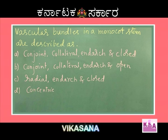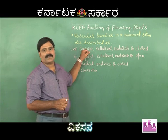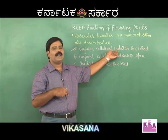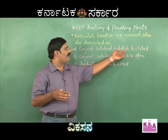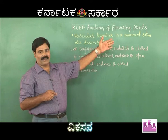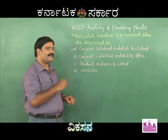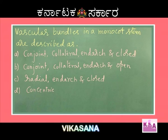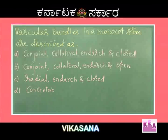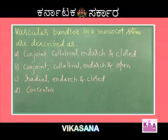The correct answer for monocot stem vascular bundles is option A: conjoint, collateral, endarch, and closed — because cambium is absent. For a dicot stem, the answer would be conjoint, collateral, endarch, and open — because cambium is present. So for monocot stem: conjoint, collateral, endarch, closed is the correct first option.